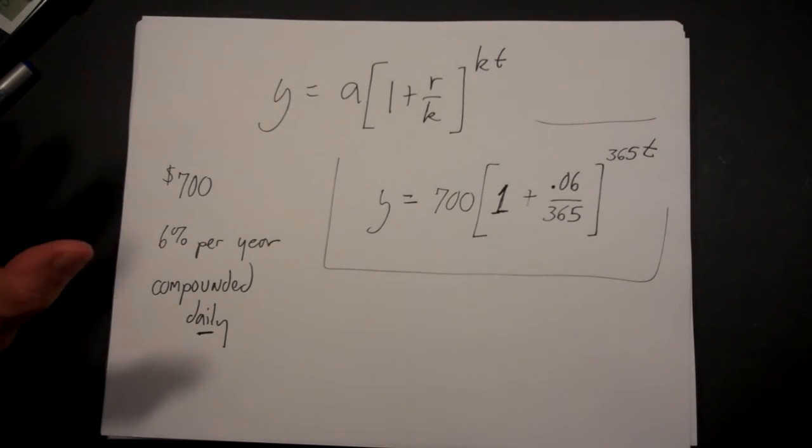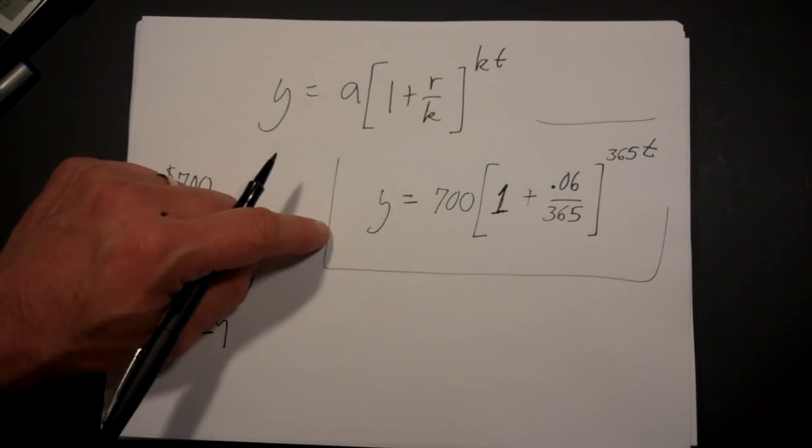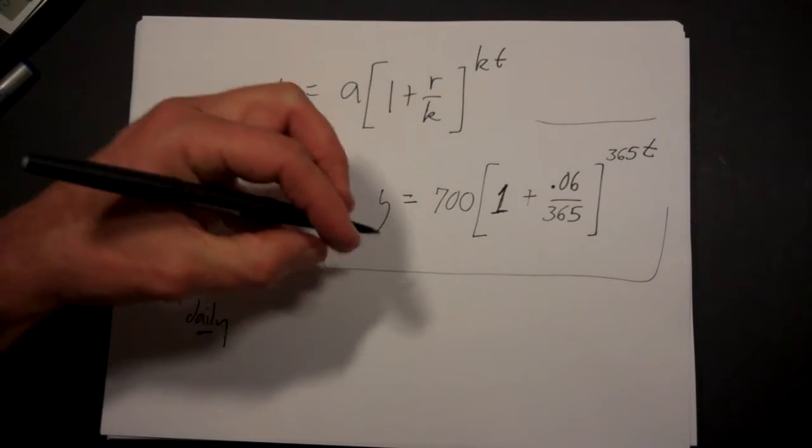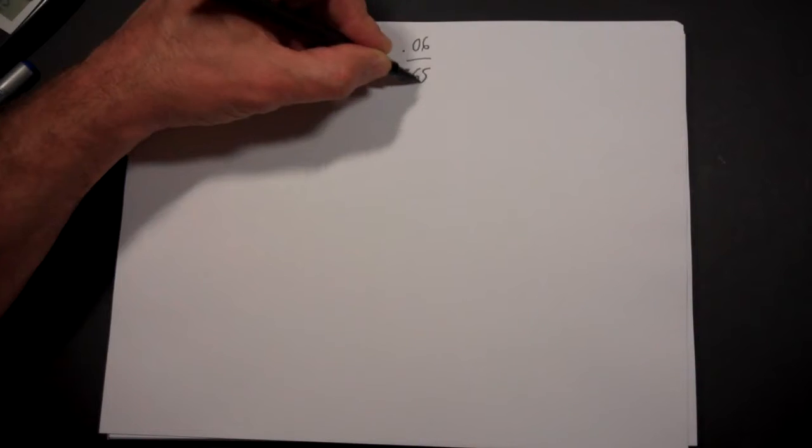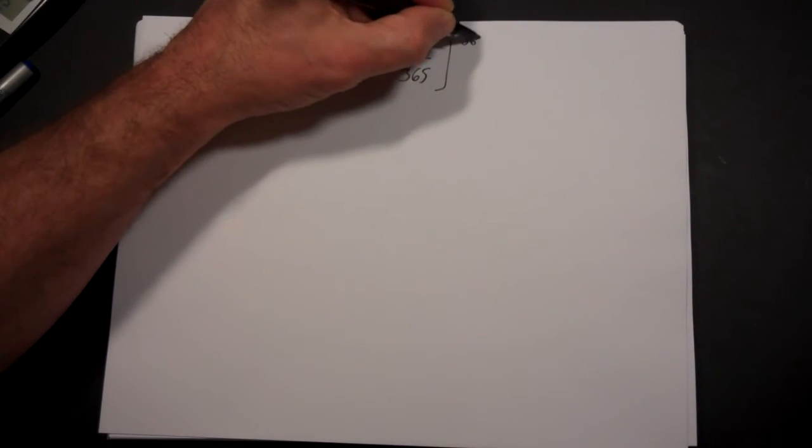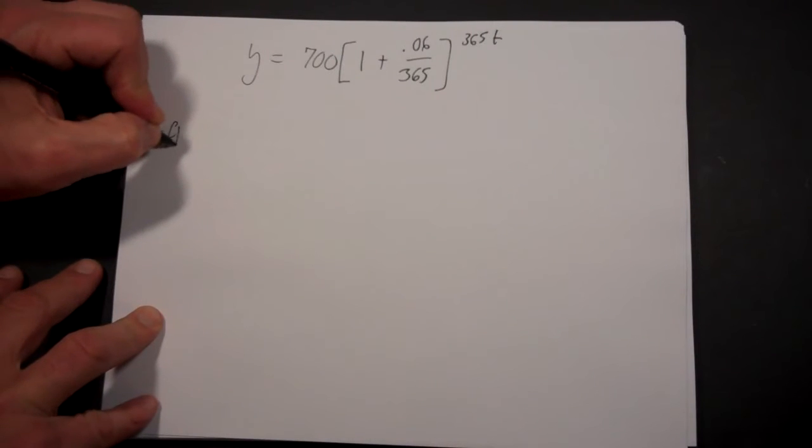Now you have to be very careful to plug this into the calculator, but what you get here is a formula you can use for however many years. So for example, we want to use this formula: y equals 700 times the quantity 1 plus .06 over 365, raised to the 365t, and we want to know how much money we have after 5 years.